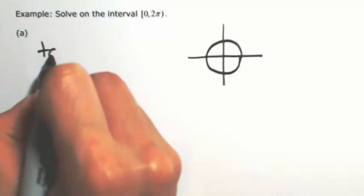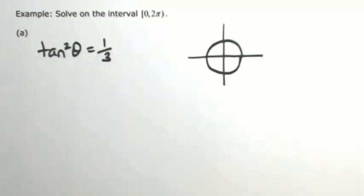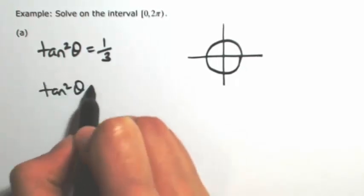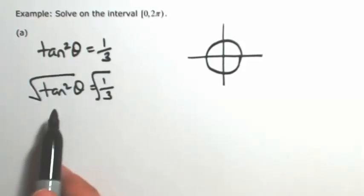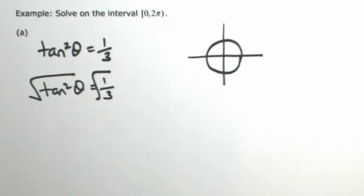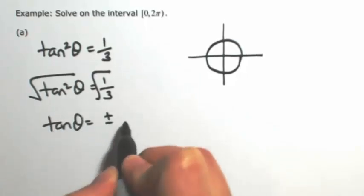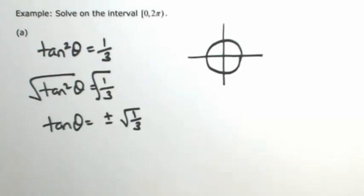Let's say we have tangent squared of theta equaling 1 third. So I'm trying to solve for theta, so I should get the tangent of theta by itself. Because it's being squared, I'm going to take the square root of both sides, keeping in mind that because this is tangent squared, there's actually two possibilities for theta. It could be plus or it could be minus. So then we have the tangent of theta could be plus or minus square root of 1 third. Again, because it's being squared, there's two possibilities.